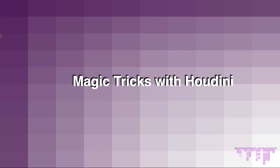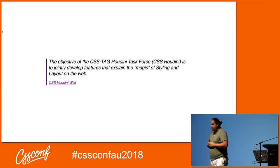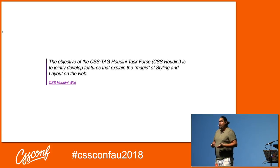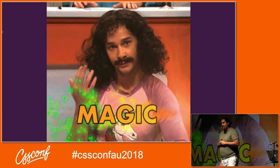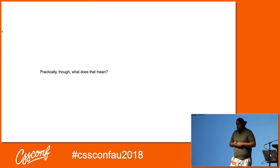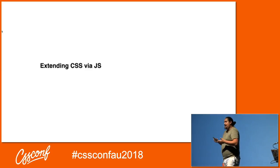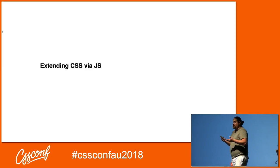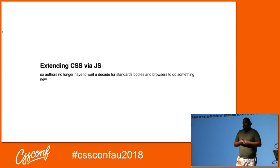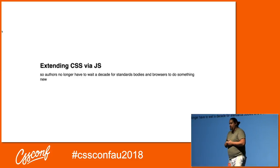We're here to talk about Houdini. The first question is: what is Houdini? According to their wiki, the objective of the CSS Houdini task force is to jointly develop features that explain the magic of styling and layout on the web. Practically, it means being able to extend CSS via JavaScript so that authors no longer have to wait decades for standards bodies and browsers to bring new stuff into fruition.